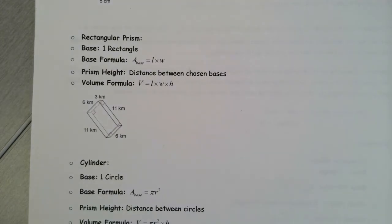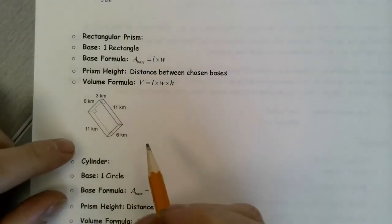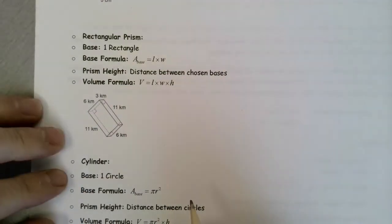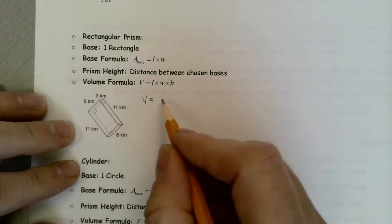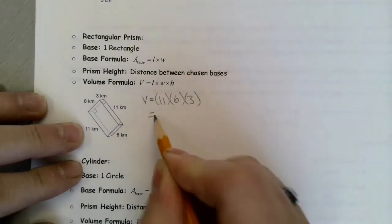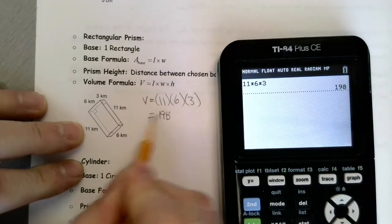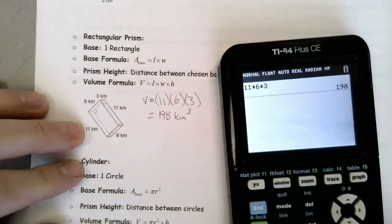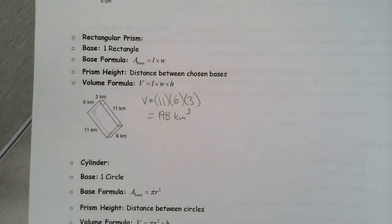In this question, we're looking at a rectangular prism, which is no more difficult than the square prism. You could consider any one of the faces to be the base. The volume of a rectangular prism amounts to length times width times height — that's 11 times 6 times 3. Using a calculator, 11 times 6 times 3 gives 198 kilometers cubed. The rectangular and square prisms are the easiest to work with because the area of the base is so straightforward.